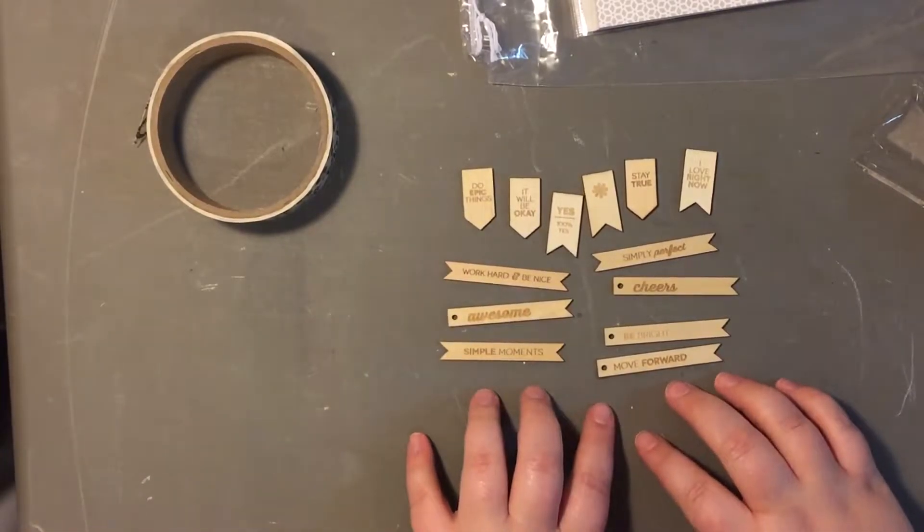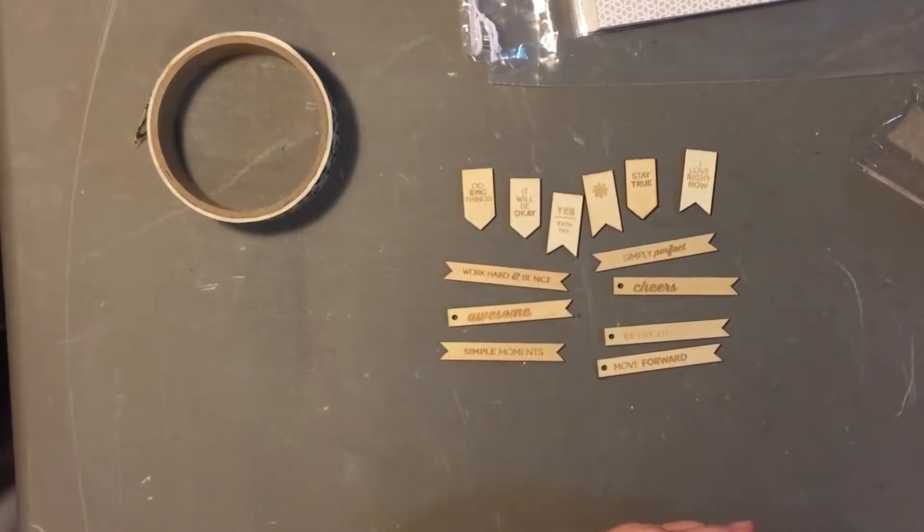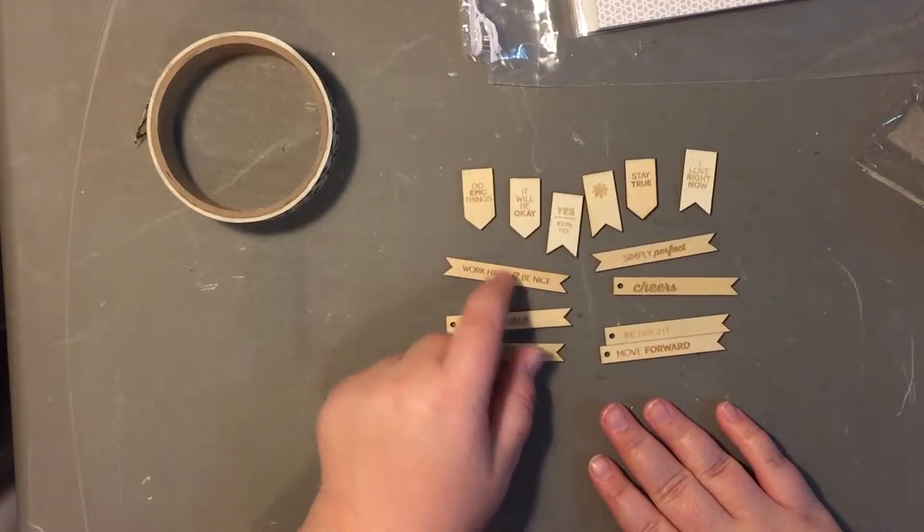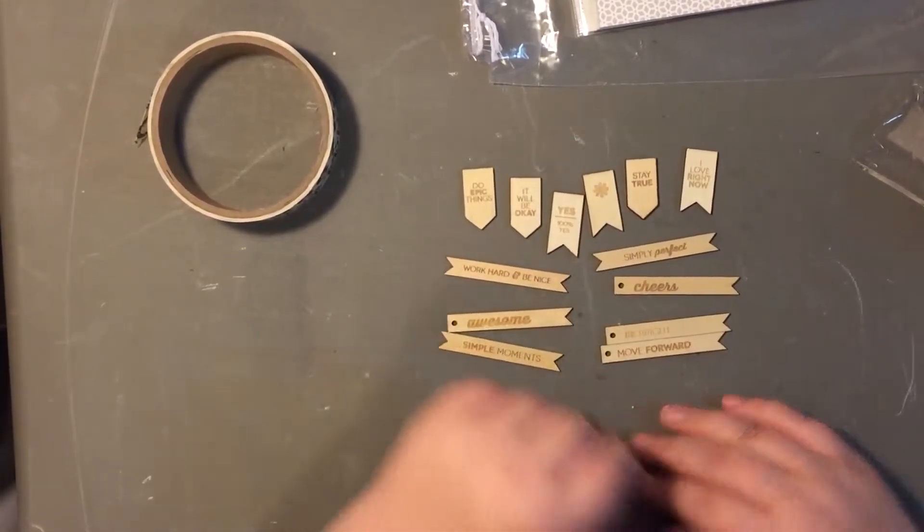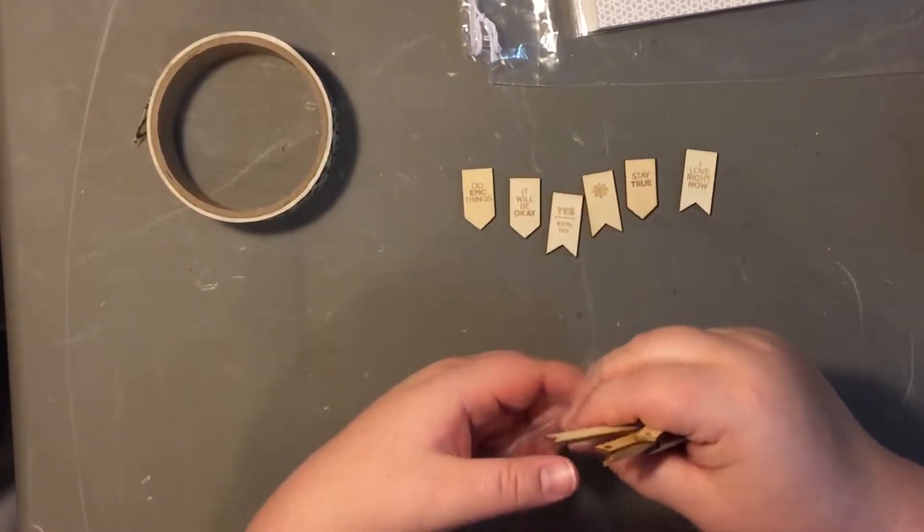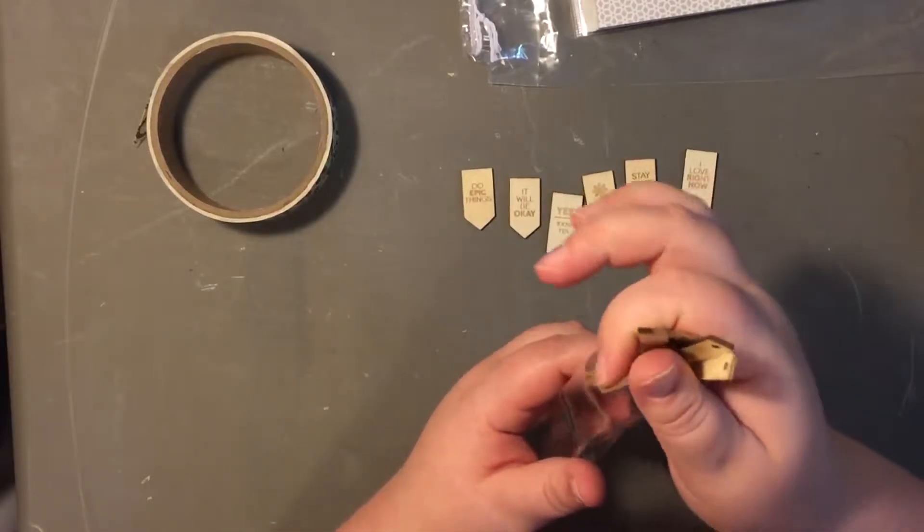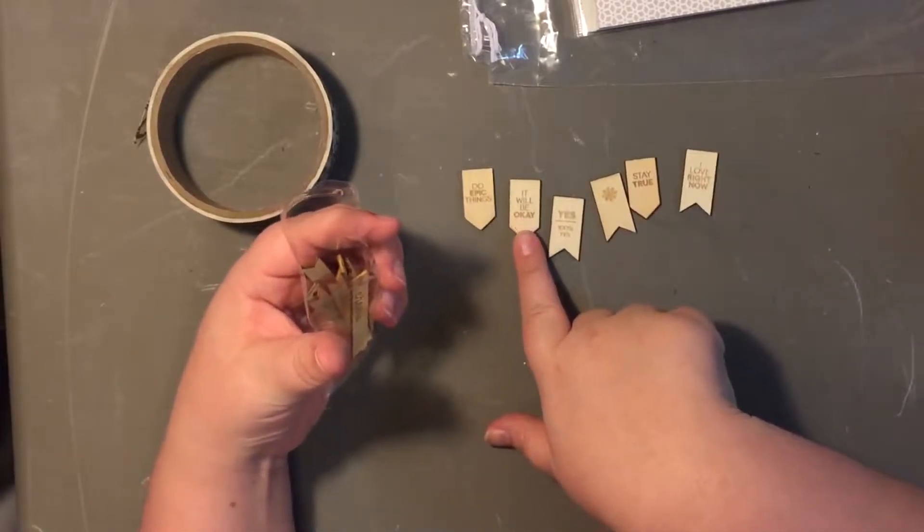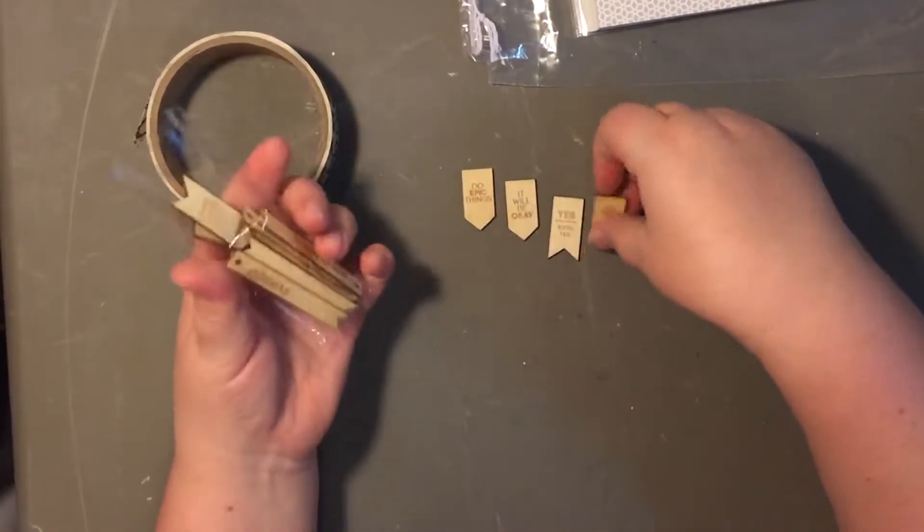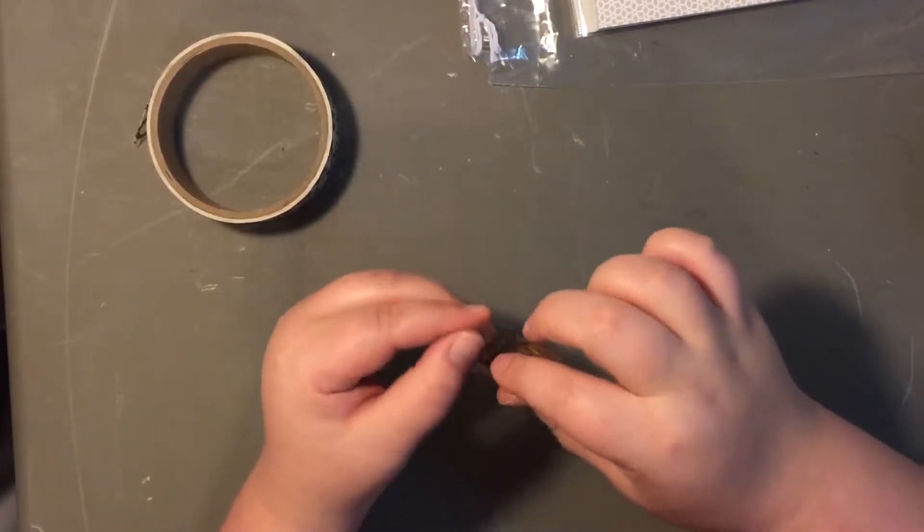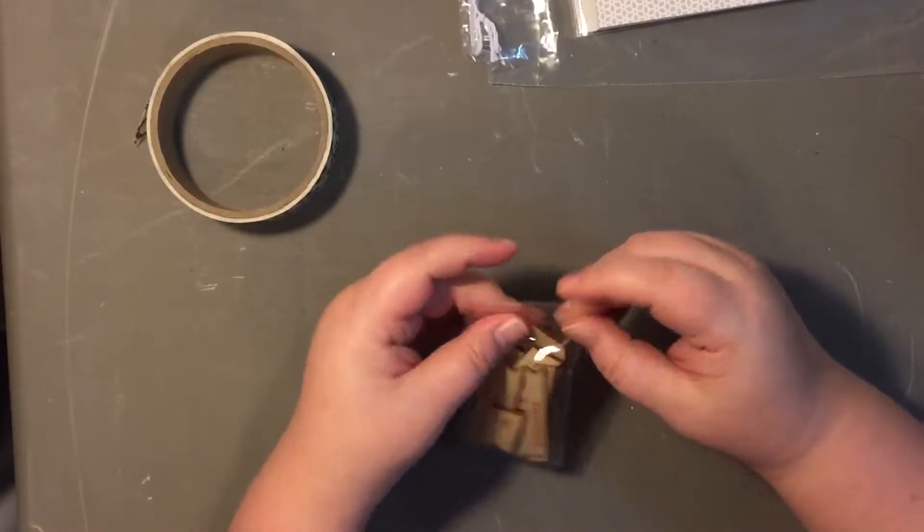I absolutely love this set of wood veneer. I think I see a lot of phrases on here that I haven't seen in previous kits or collections from anywhere. I just really like a lot of those. I really like the work hard and be nice. Do epic things. Stay true. I know a lot of people say they're tired of the best date ever type sentiments and it's totally true. And these aren't negative sentiments. Well, I guess that one says it will be okay. But just, I just like some different phrases. So I really love those wood veneer. Love, love, love, love.